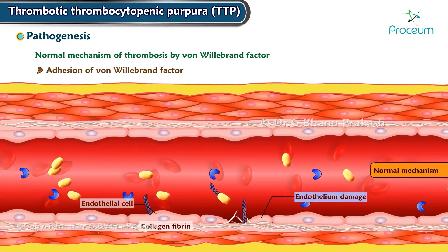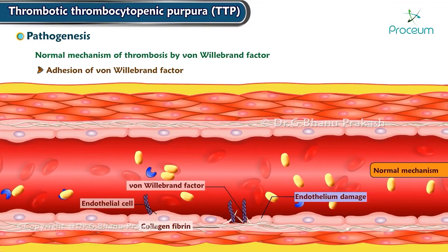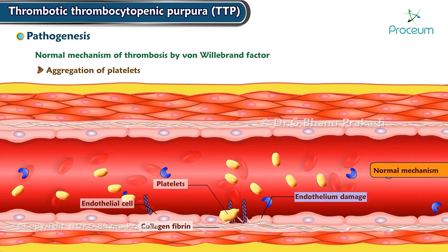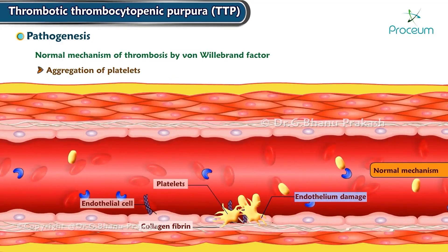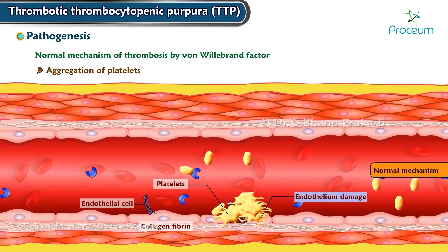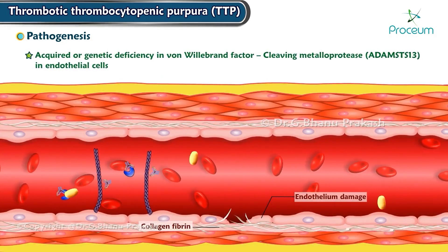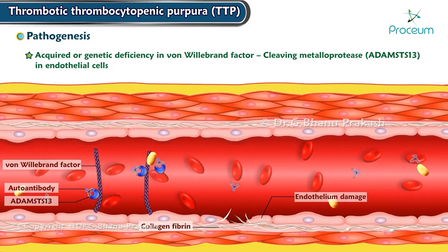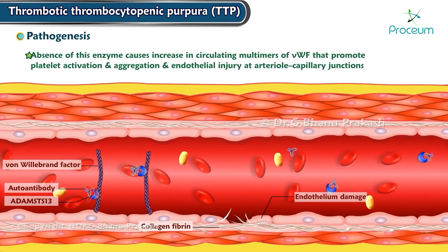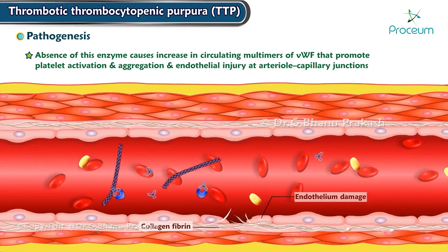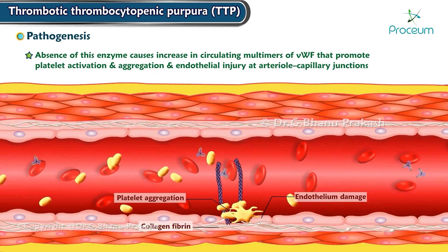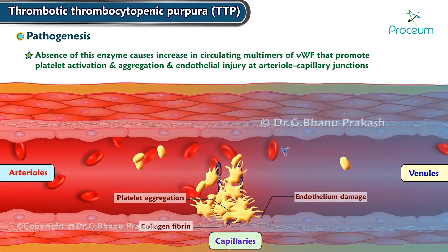Von Willebrand factor binds to the subendothelial collagen fibrils that become exposed at the site of endothelial damage. Platelets are recruited to sites of endothelial damage by detection of von Willebrand factor bound to exposed subendothelial collagen using cell surface glycoprotein 1b receptors. Acquired or genetic deficiency of ADAMTS13 causes a deficiency of this cleaving metalloprotease in endothelial cells, resulting in increased circulating multimers of von Willebrand factor that promote platelet activation and aggregation at arteriolar-capillary junctions.